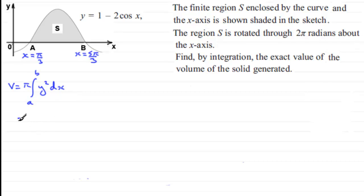Next we substitute for our y value. We're integrating from A to B, y squared, so we've got 1 minus 2 cos x all squared, integrating that with respect to x.